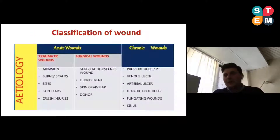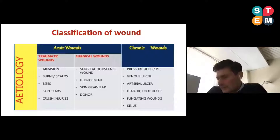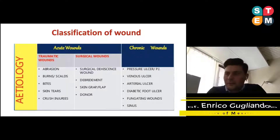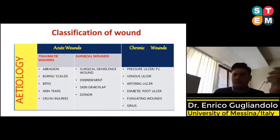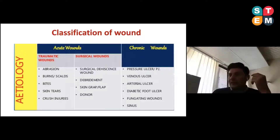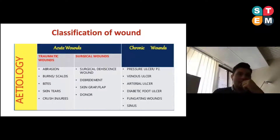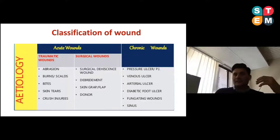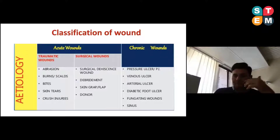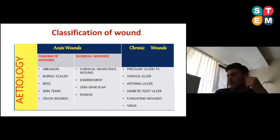We can classify wounds into acute wounds — following surgical procedures or traumatic events — and in some conditions the wound can become a chronic wound. This can occur when other factors come into play in wound healing, such as diabetes, infection, or the presence of flies and mosquitoes that cause an impairment in the physiological wound healing process.